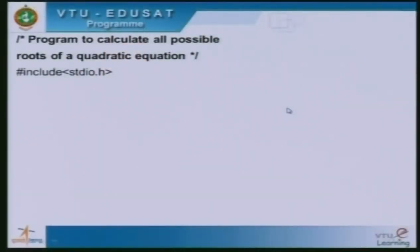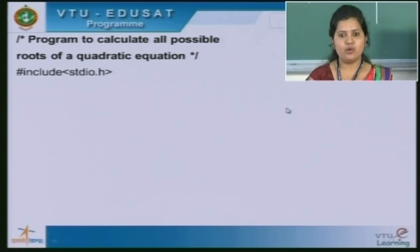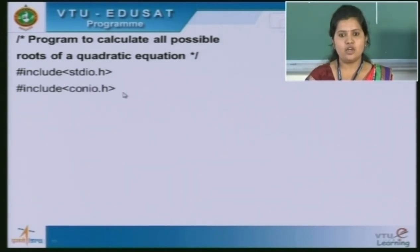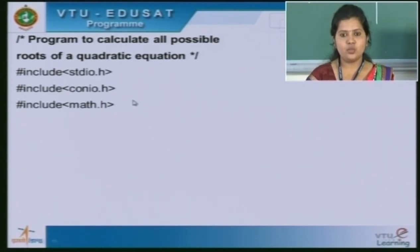The very first line in this program is #include stdio.h. Here #include is a preprocessor directive — it includes all the header files such as stdio.h, conio.h, math.h and so on. stdio stands for standard input/output header file. conio stands for console input/output header file. math.h is the mathematical header file; since we are using mathematical library functions like sqrt and fabs, these two functions are defined in this header file.